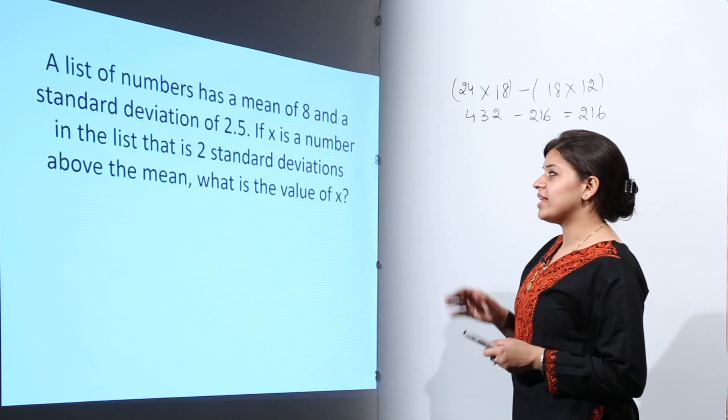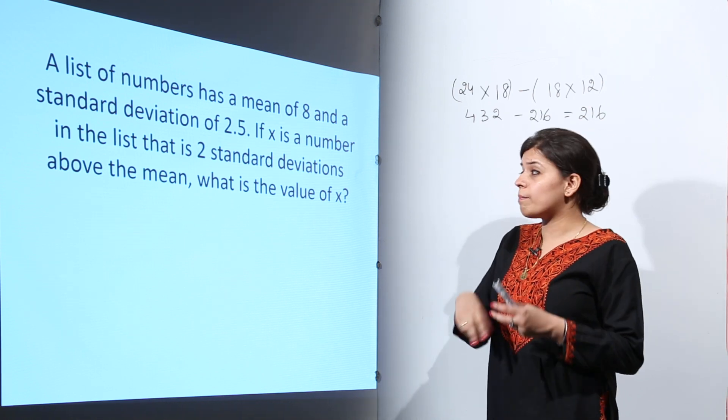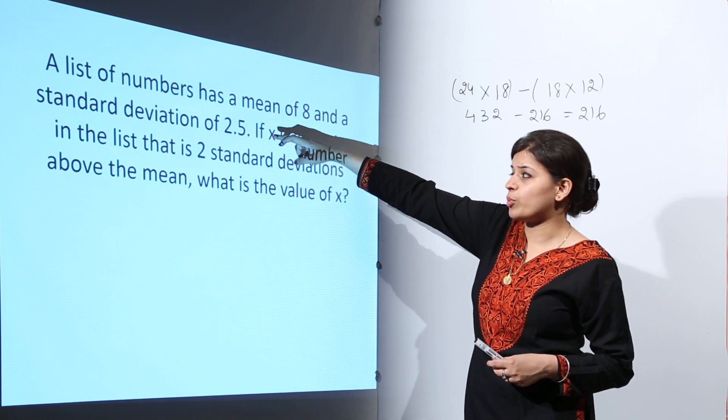We know that if x is a number that is two standard deviations above the mean, one standard deviation is 2.5.